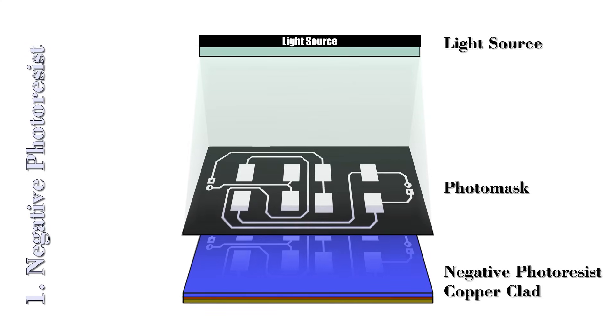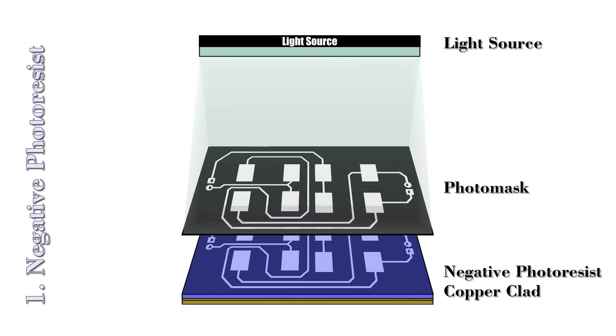The light blue color in the picture indicates the hardened photoresist, while the remaining area represents the softened photoresist, which will be removed in the later stage of PCB manufacturing.